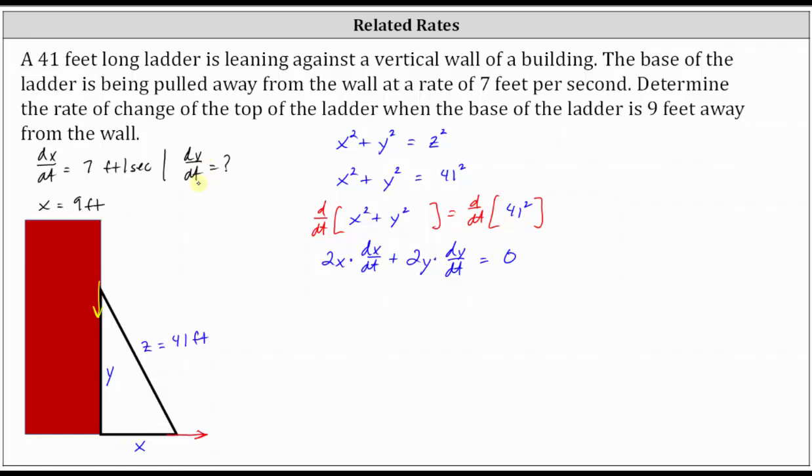From here, because we're looking for dy dt, we now need to solve the equation for dy dt. Let's first subtract two X dx dt on both sides. This gives us two Y times dy dt equals negative two X times dx dt.